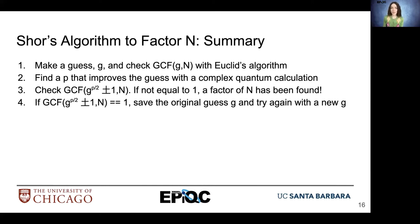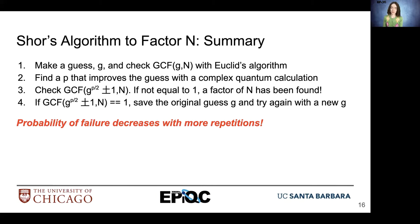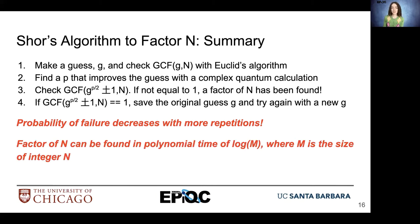Unfortunately, if the greatest common factor of our new improved guess and n is equal to 1, we have found two co-primes and we'll have to try again. We'll want to save that original guess so we don't reuse it. Every time we repeat Shor's algorithm, the probability of failure decreases. Eventually, we'll find a factor of n, and this is found in polynomial time of log m, where m is the size of our integer n.